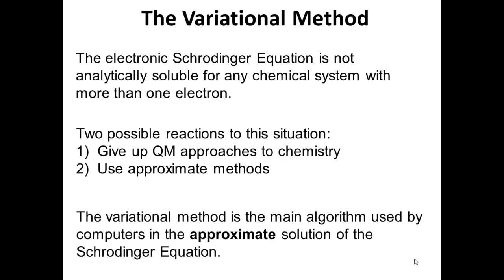The variational method is the main algorithm used by computers in the approximate solution of the Schrodinger equation. So we're going to learn how to do this ourselves — execute the variational method with pencil and paper — and then we're going to let computers do the heavy lifting for us in the future.